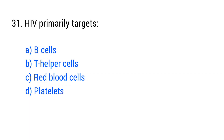Question No. 31. HIV primarily targets? The right answer is Option B: T-helper cells.